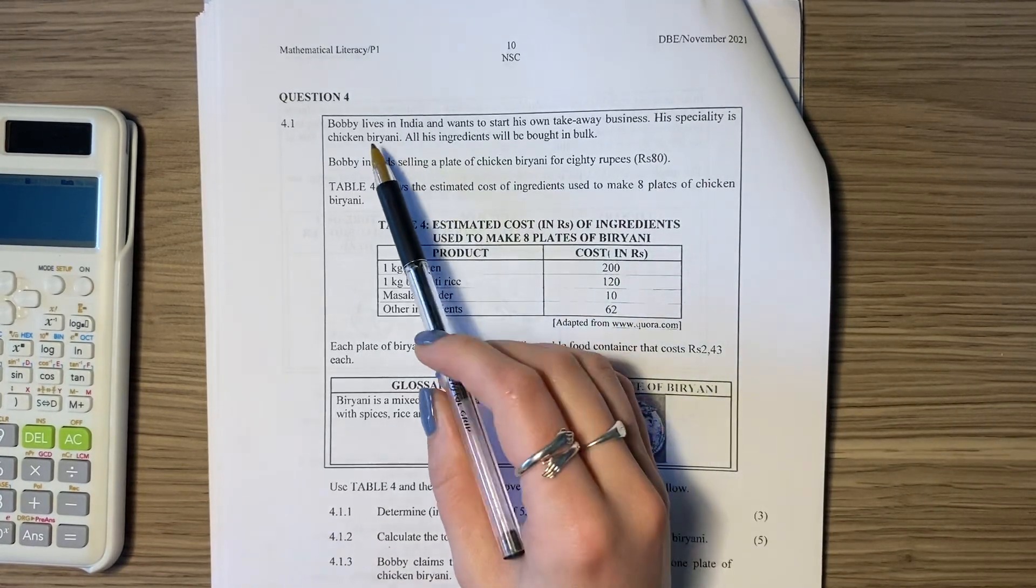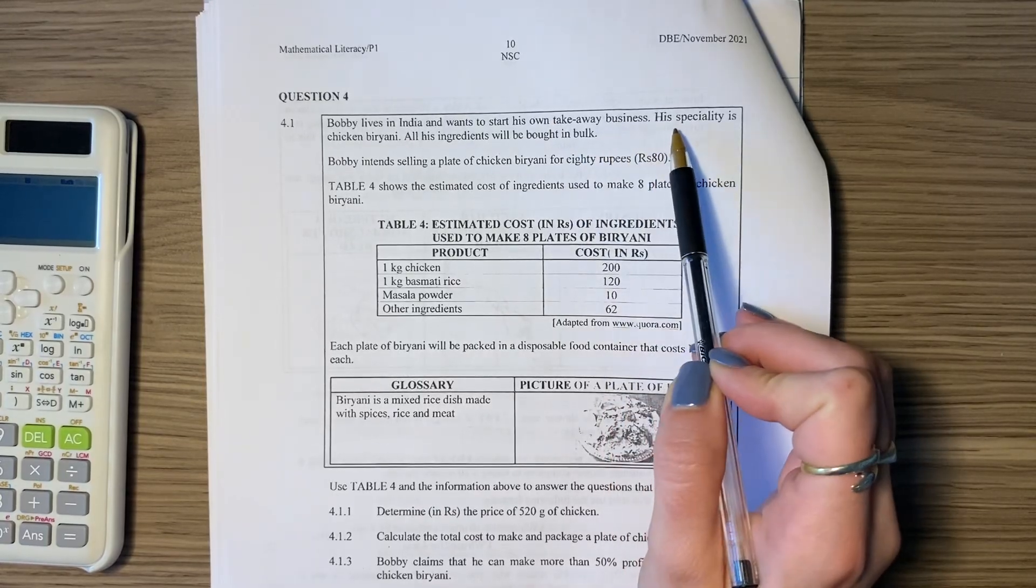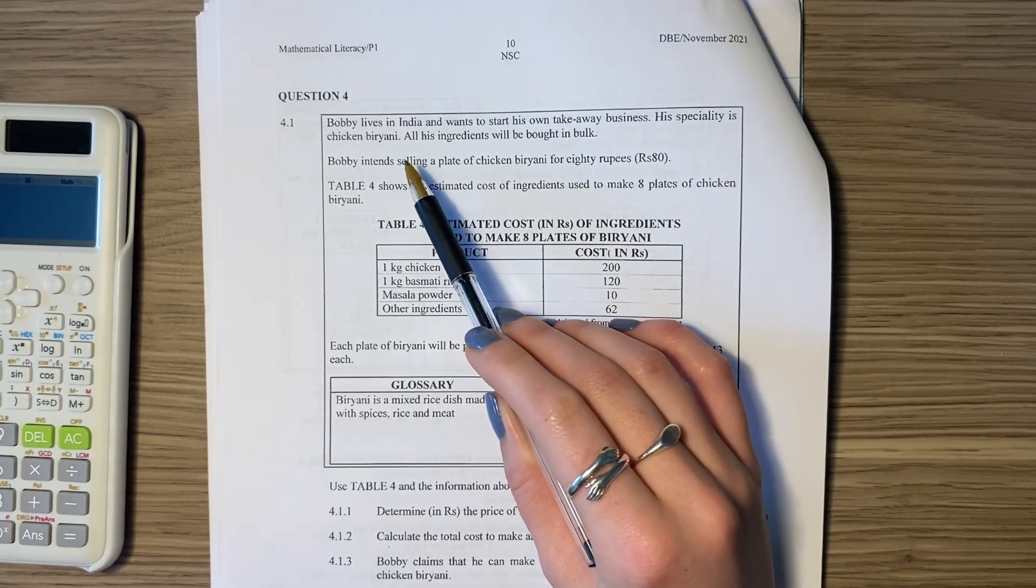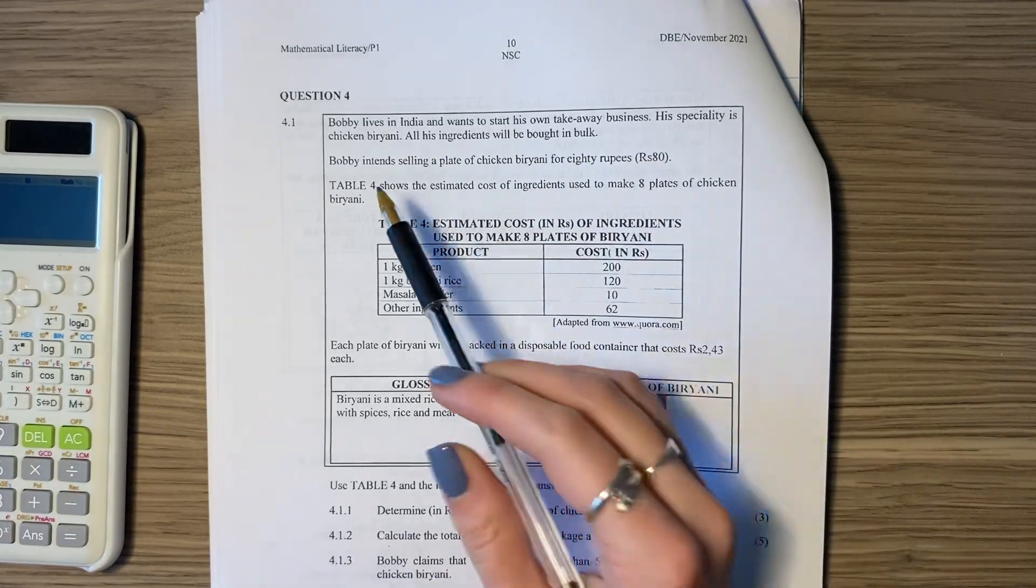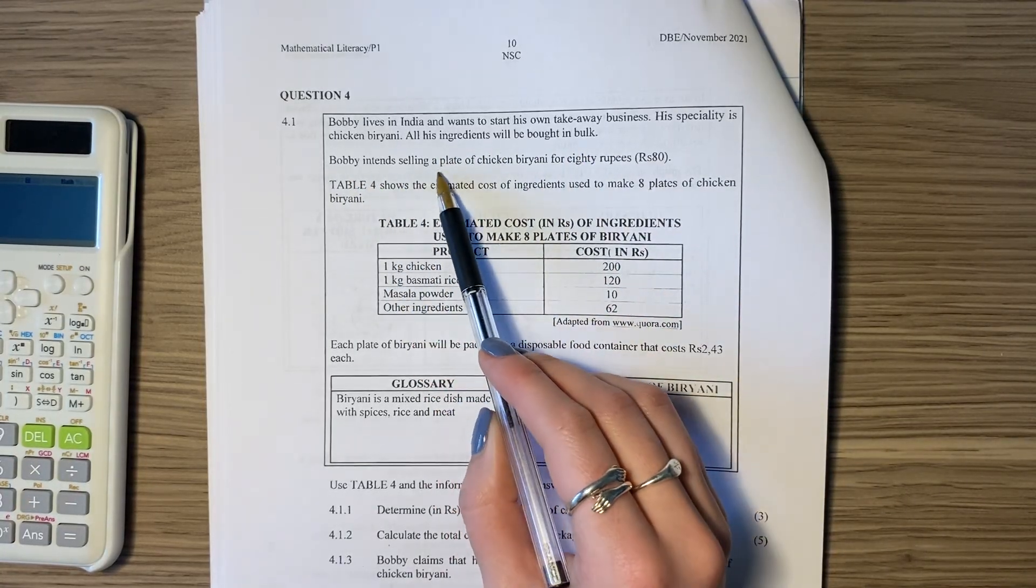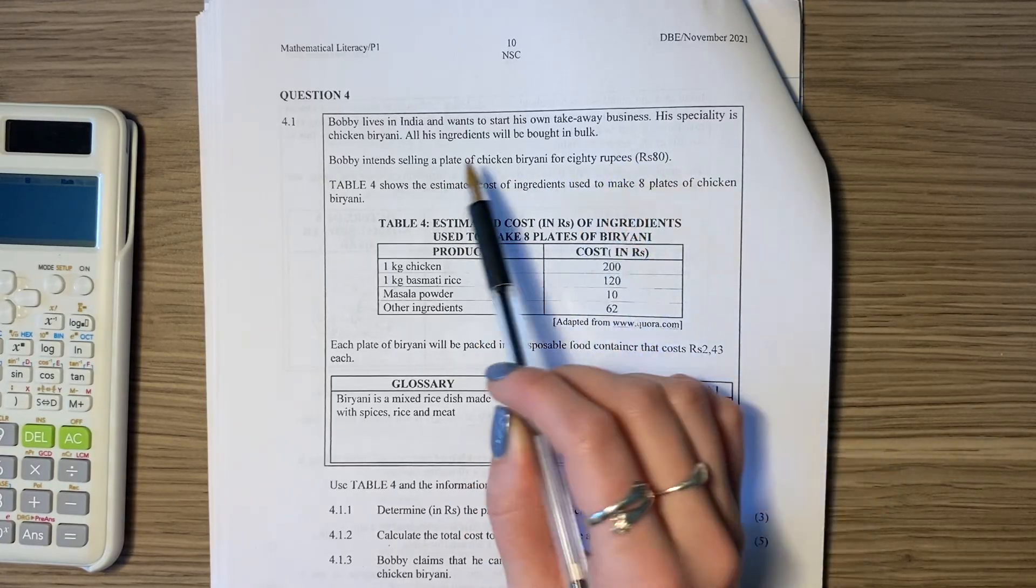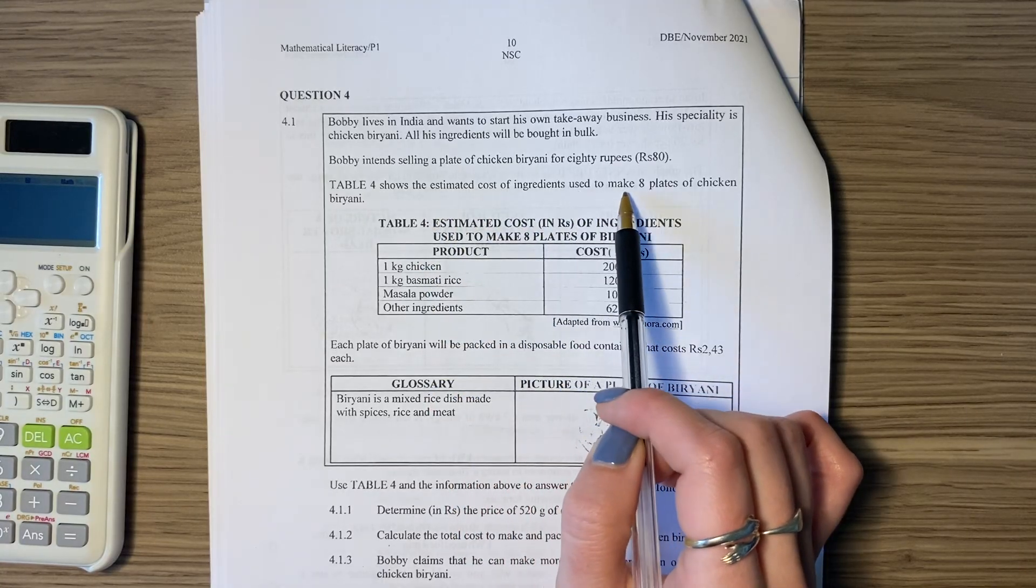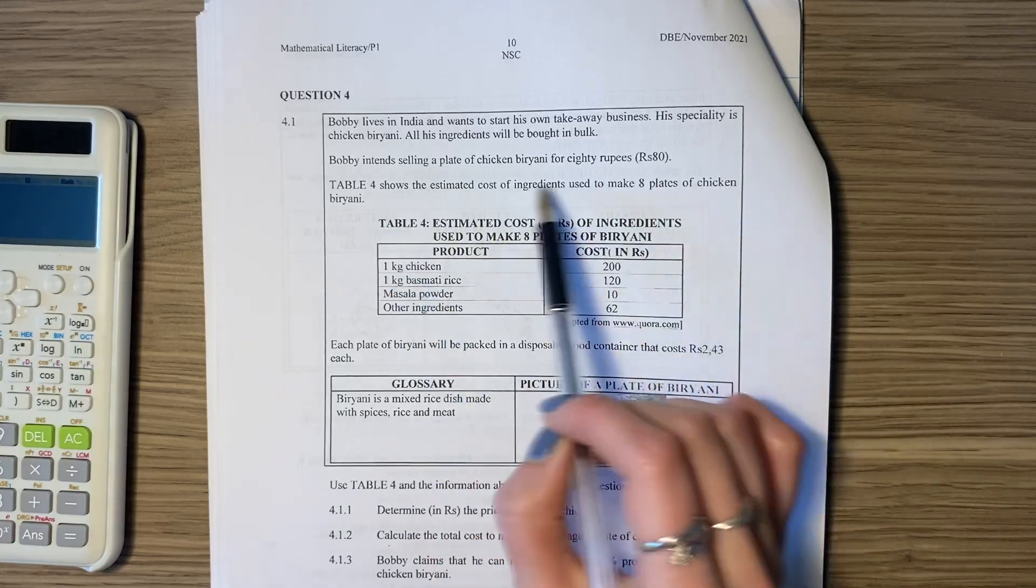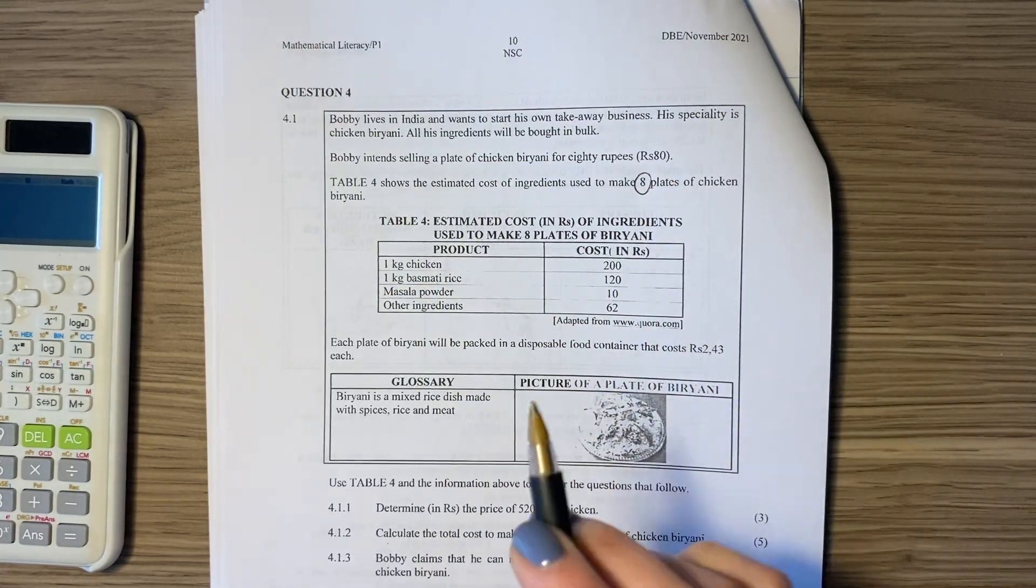Alright, let's start with question 4. Bobby lives in India and wants to start his own takeaway business. His specialty is chicken bryani. All his ingredients will be bought in bulk. Bobby intends selling a plate of chicken bryani for 80 rupees. Table 4 shows the estimated cost of ingredients used to make 8 plates of chicken bryani. Not 1, but 8. So if you just need to remind yourself, do a little circle or use a highlighter.